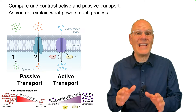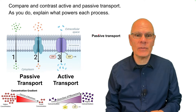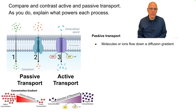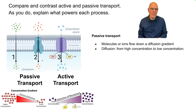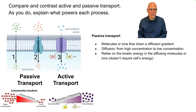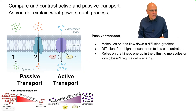Compare and contrast active and passive transport, and explain what powers each process. Passive transport is when molecules or ions flow down a diffusion gradient — from higher concentration to lower concentration. It relies on the kinetic energy of the diffusing molecules or ions and doesn't require cellular energy. As you can see here, molecules are flowing down their concentration gradient.